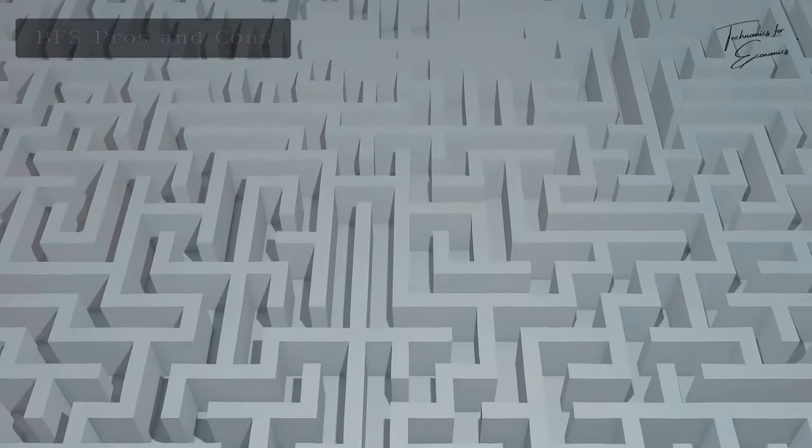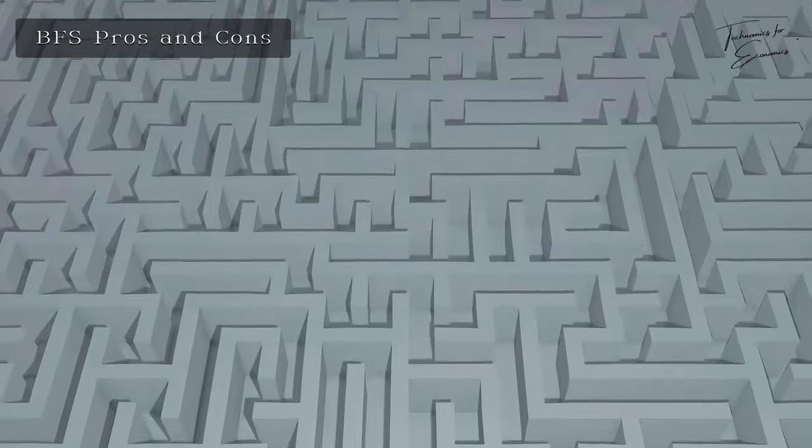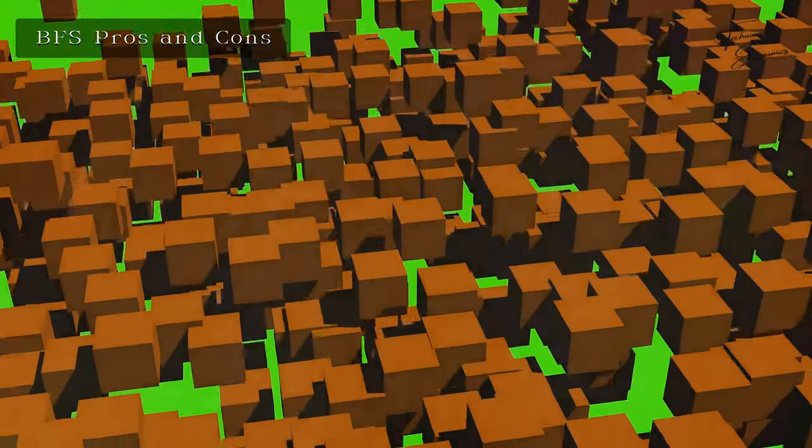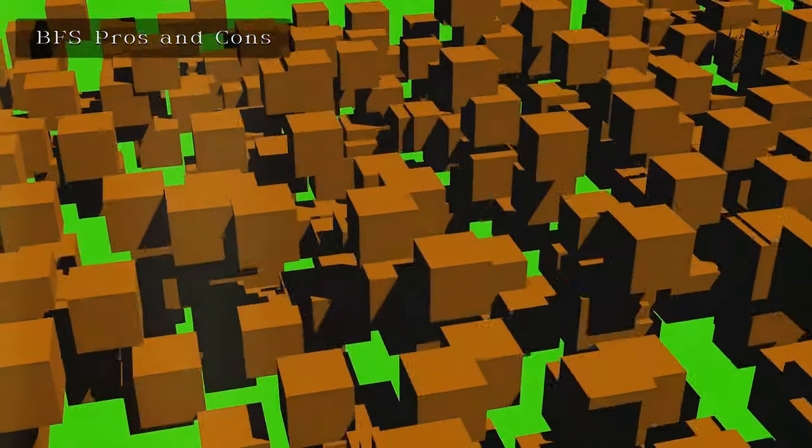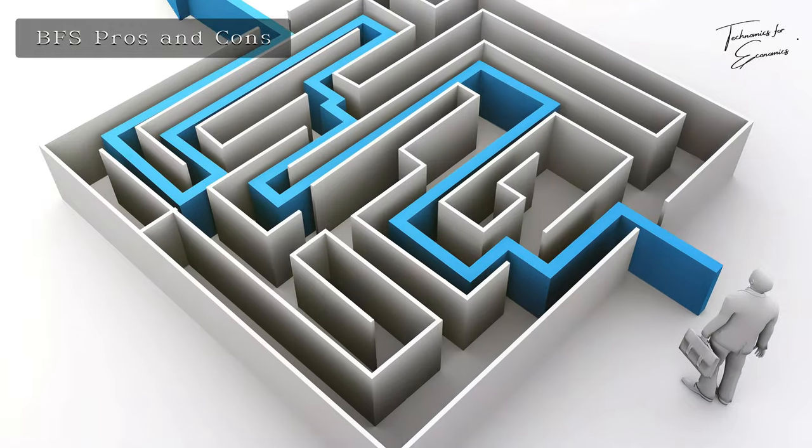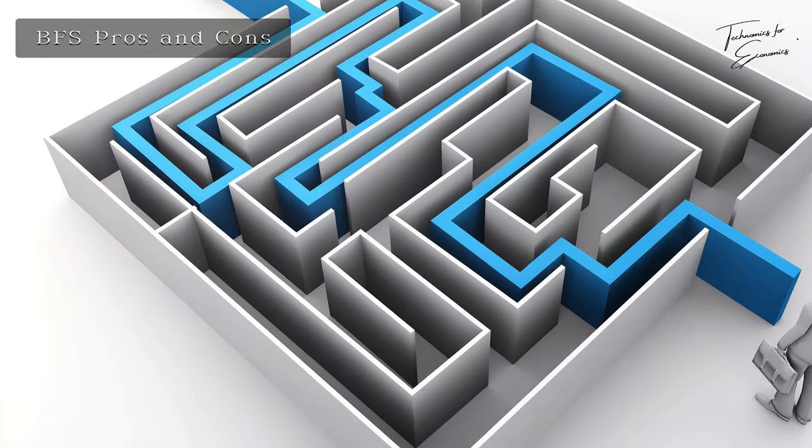Next, we have Breadth First Search, or BFS. This algorithm spreads out like waves, exploring all possible paths simultaneously at each step. It's like greeting all your friends at a party before starting a conversation.